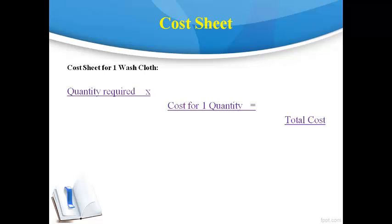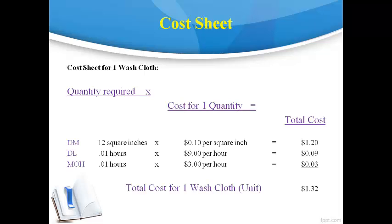It is important to note that a quantity is not the same thing as a unit. A unit is a whole product — one washcloth. A quantity is something included in the whole of a product, like 12 square inches of material. All three types of product costs — direct material, direct labor, and manufacturing overhead — are stated on the cost sheet. A washcloth requires 12 square inches of cloth at a cost of 10 cents per square inch. It takes direct labor .01 hours to make one washcloth, and direct labor is paid $10 per hour.